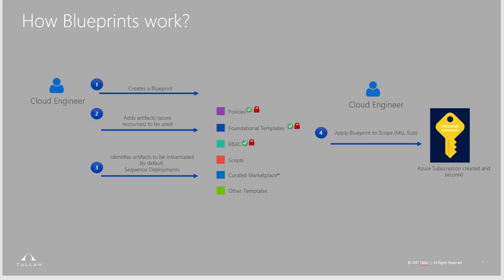So how do blueprints work? In this example, the cloud engineer creates a blueprint, adds the resources to be used, identifies artifacts to be instantiated through sequence deployments, and applies the blueprint to scope. Compose, manage, scale — an automated, easy-to-deploy solution to help govern your organization's subscriptions so the infrastructure you build is maintained as you designed it.